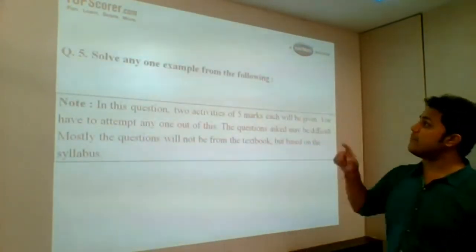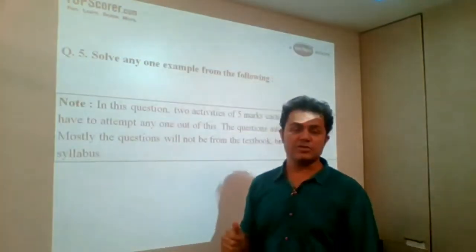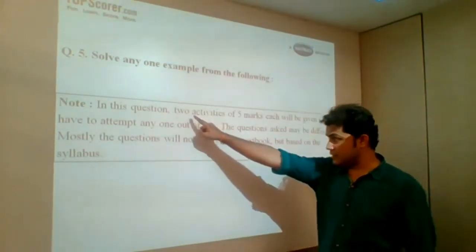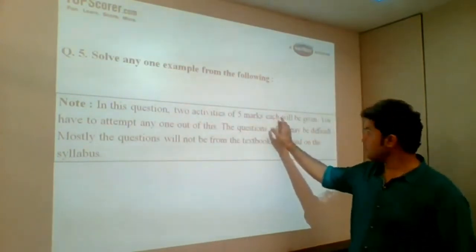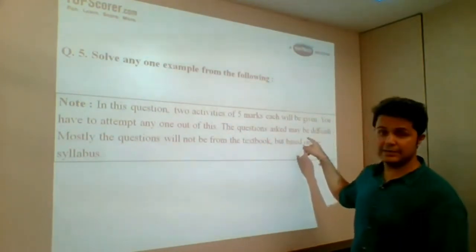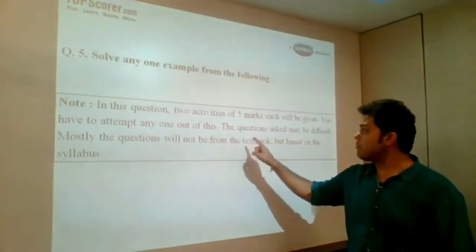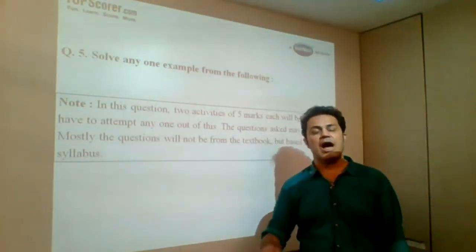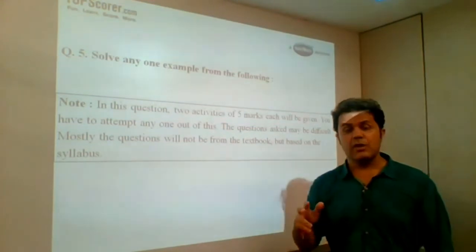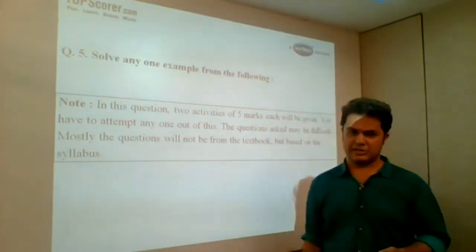Now solve any one example from the following. Question number 5 will carry all 5 mark questions. Each question will have a weightage of 5 marks. 2 questions will be given, out of which you need to attempt any one. In this question, 2 activities of 5 marks each will be given. You have to attempt any one out of this. The questions asked may be difficult. That is, it may be of HOTS category - high order thinking skills. Mostly, the questions will not be from the textbook, but based on the syllabus. So either question number 4 or question number 5, either of these 2 questions may have questions which are not inside the text. It can be based on the syllabus, but not from the textbook.